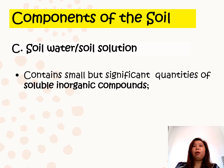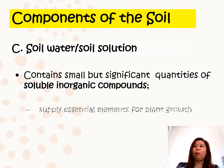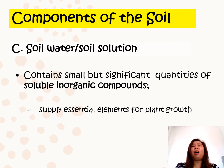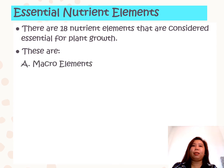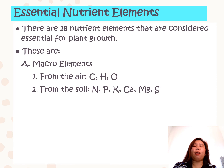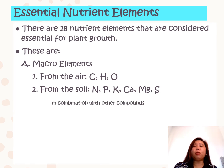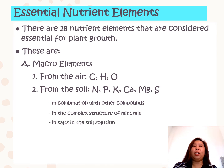Soil water also contains small but significant quantities of soluble inorganic compounds — the essential elements for plant growth. There are 18 essential elements for plant growth, generally divided into two groups. The macro elements include those coming from the air — carbon, hydrogen, and oxygen — and those from the soil: nitrogen, phosphorus, potassium, magnesium, and sulfur. These macro elements from the soil can be in combination with other compounds, found in the complex structure of minerals, or in salts in the soil solution.